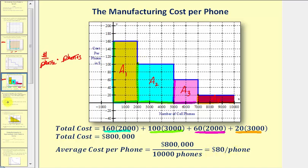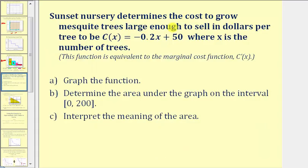Now let's take a look at one more example. Sunset Nursery determines the cost to grow mesquite trees large enough to sell in dollars per tree to be C of X equals negative 0.2X plus 50, where X is the number of trees. So the function C of X is not the total cost function — it would be the marginal cost function, which is often denoted as C prime of X. Notice how C of X is cost in dollars per tree. We're asked to graph the function, determine the area under the graph on the interval from zero to 200, and interpret the meaning of the area. Notice how we have a linear function with a vertical intercept of 50 and a slope of negative 0.2.